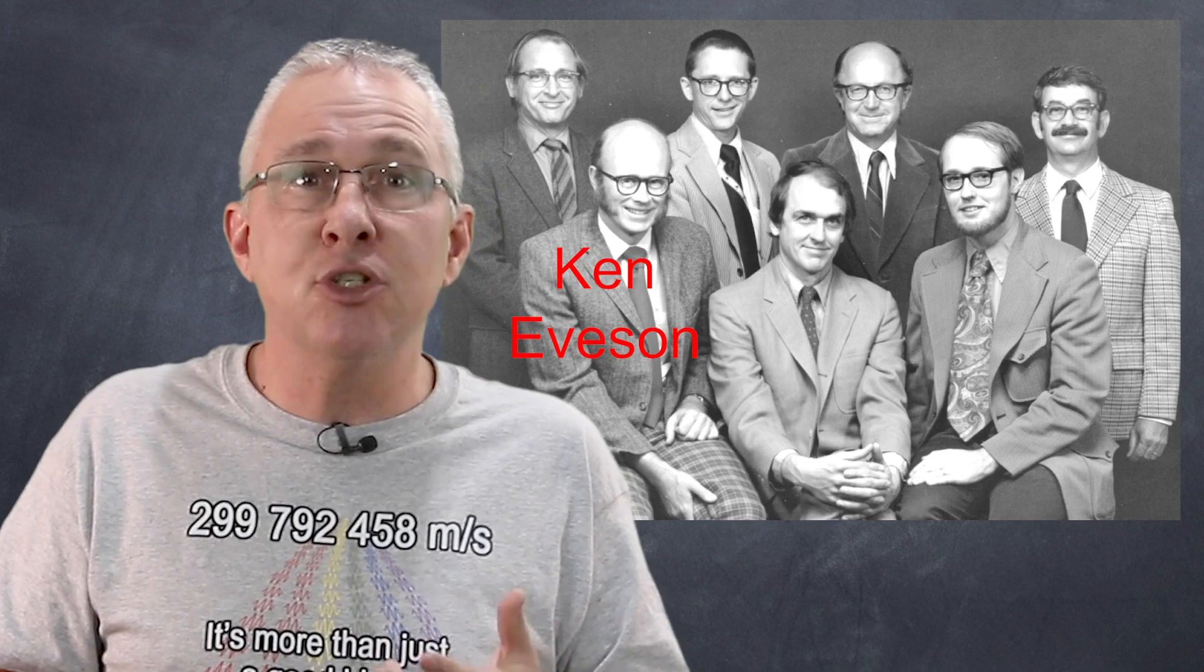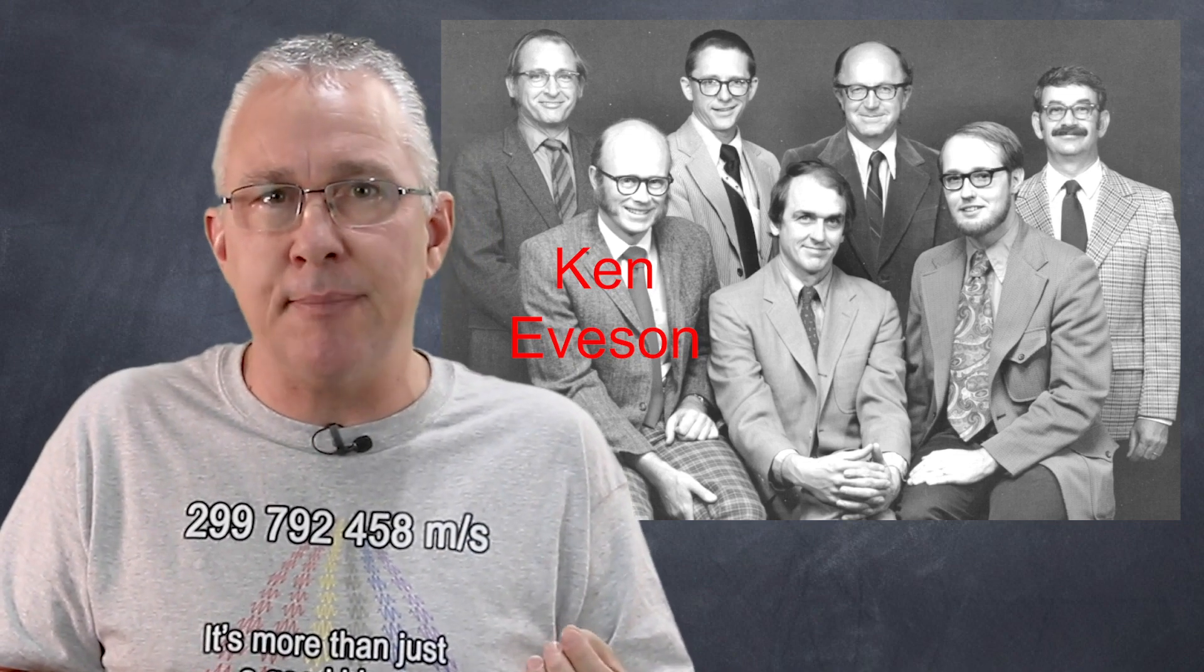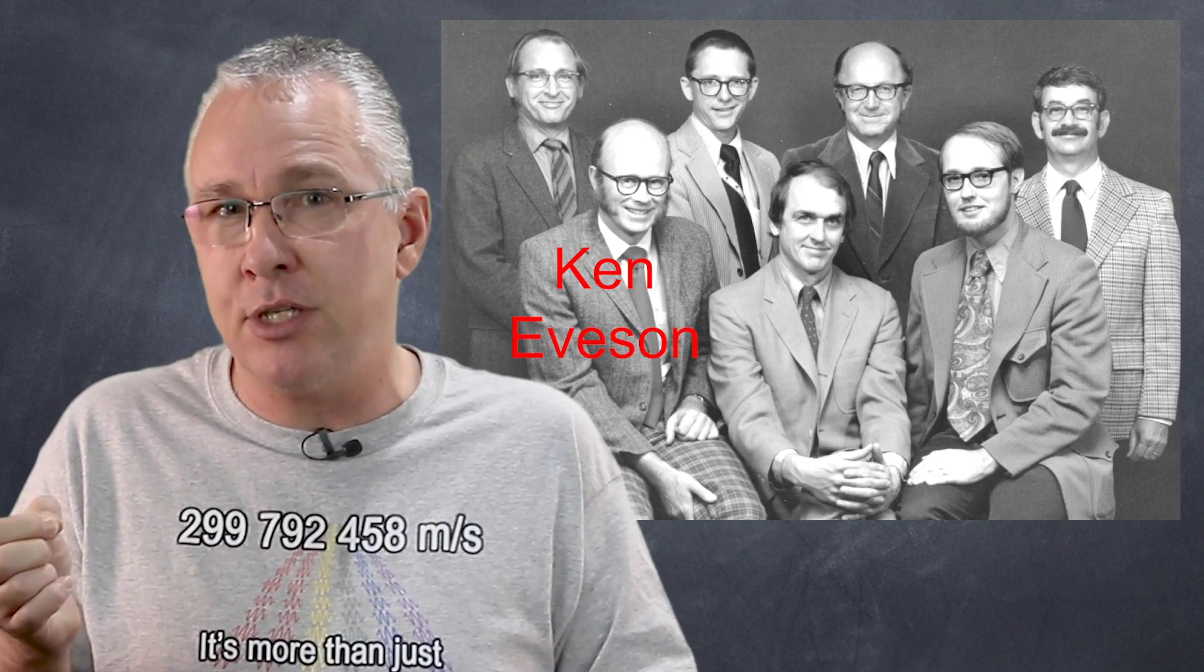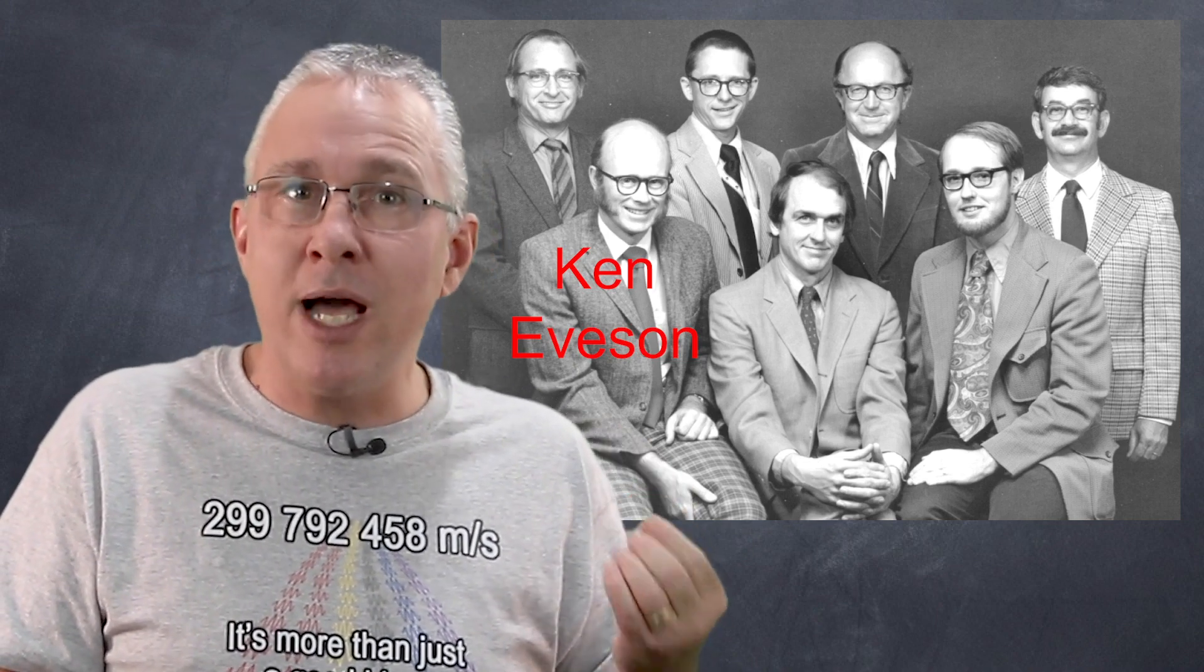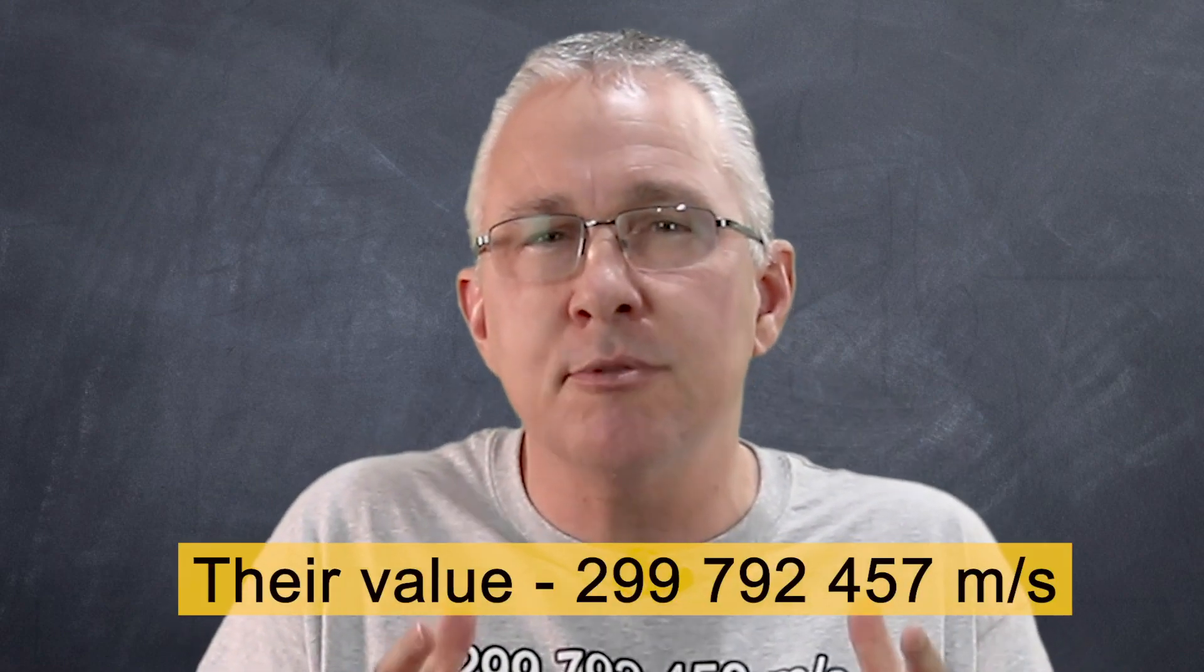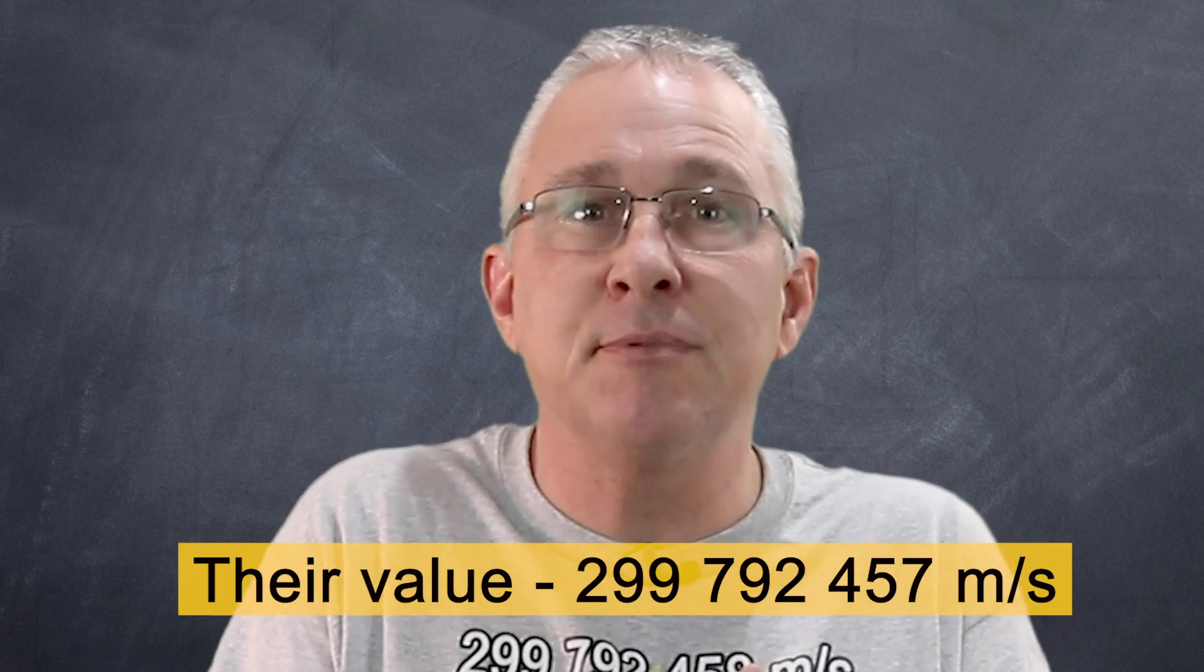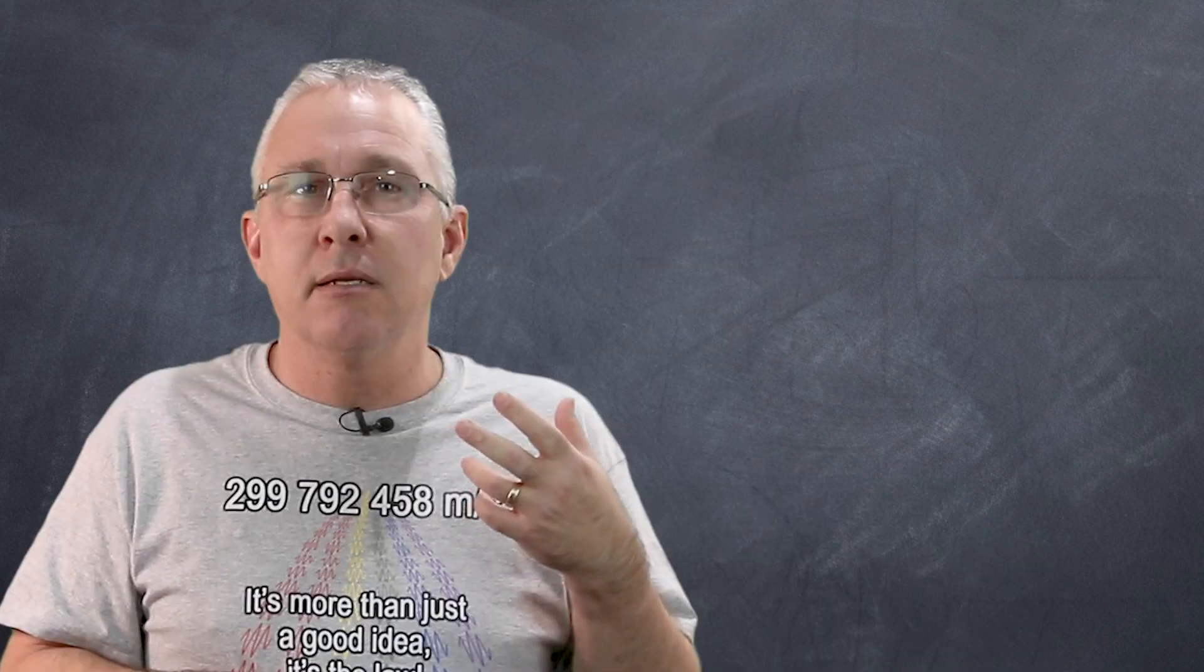Then in 1972, Ken Evenson and his team determined the frequency of methane-stabilized laser to a very high degree of certainty, and then using interferometry, and with this frequency determined the wavelength to a very high degree of certainty. And the two measurements then allow them to work out the speed of light, by simply multiplying those values. And the value was 100 times more certain than the accepted value at that time.